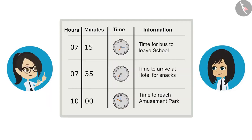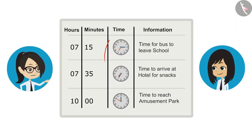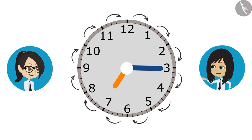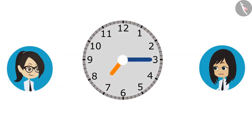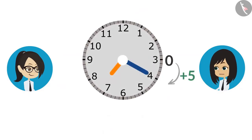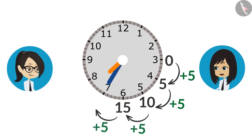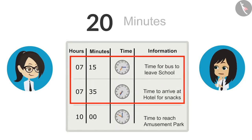Look at the minute hand — when the time is 15 minutes past 7, the minute hand is at 3, and when it is 35 minutes past 7, the minute hand is at 7. We only have to find the difference between minutes. The difference from one number to another is 5 minutes, so we keep adding 5. Starting at 3 as 0: it takes 5 minutes to reach 4, 10 to reach 5, 15 to reach 6, and 20 to reach 7. This means the bus takes 20 minutes from school to reach the hotel.